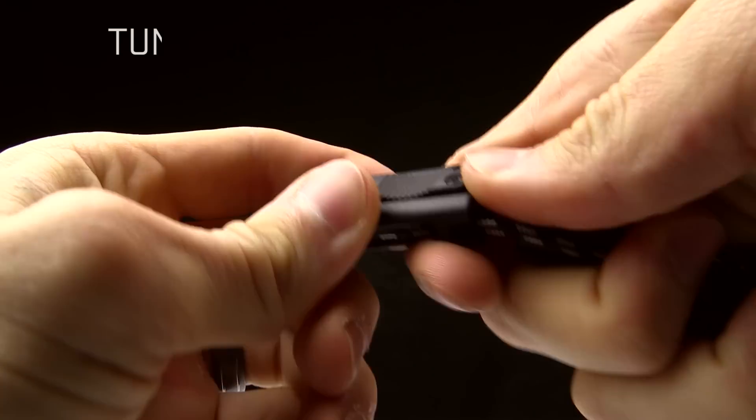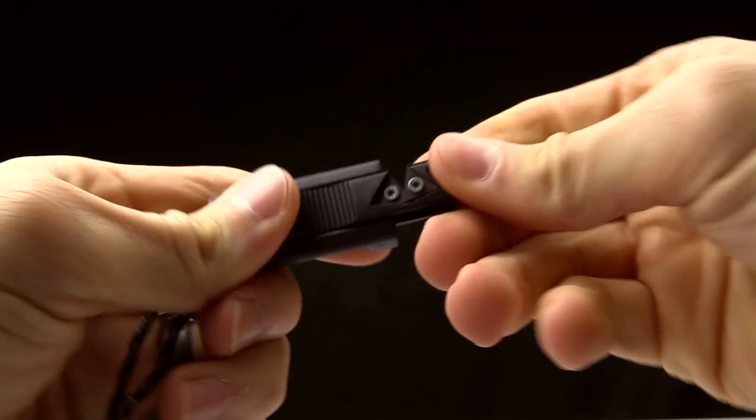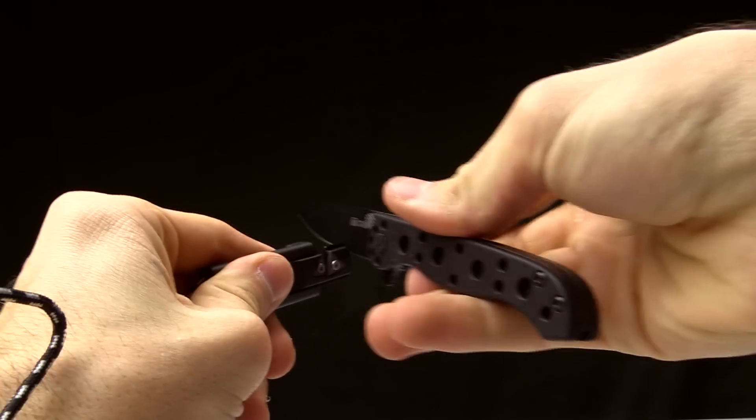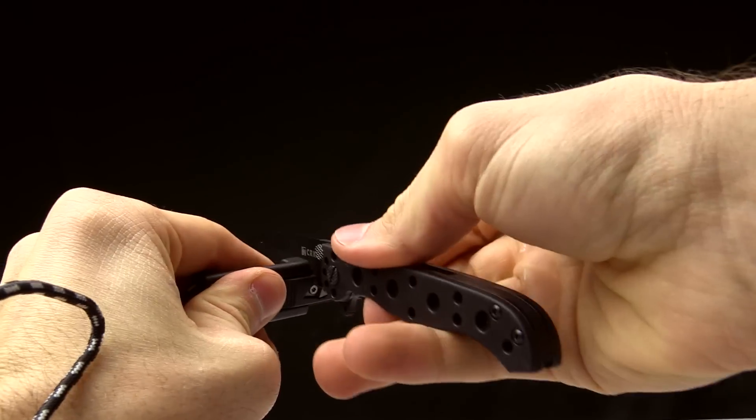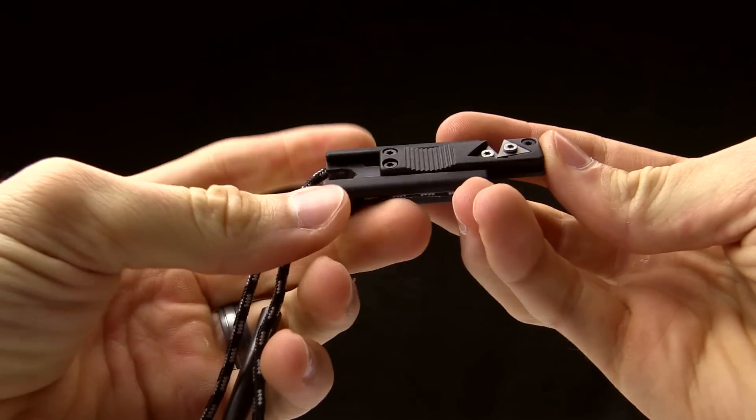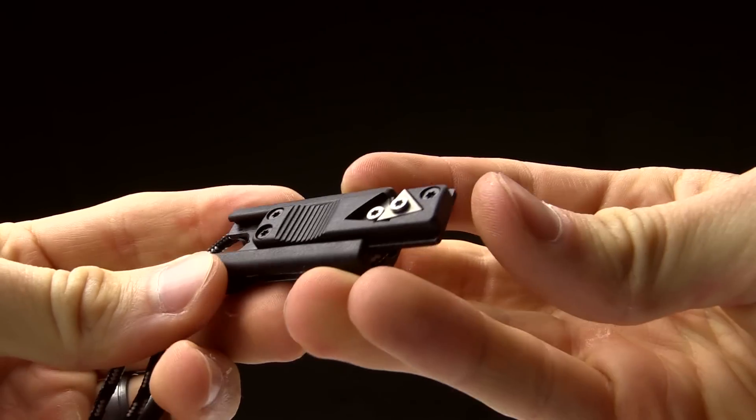Kind of your carbide knife sharpener and basically that works just like any other sharpener of this style. You take your knife, run it through there and it will sharpen it up. Now this is a field sharpener. It's not going to put the best edge on your knife but if you're in an emergency it's definitely going to do the job.